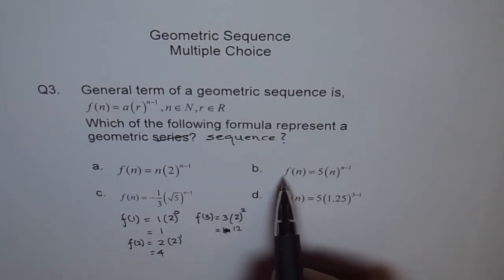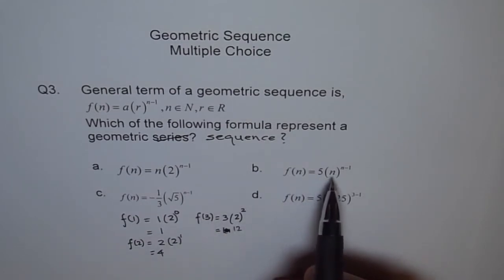Next term, f(n) equals 5·n to the power of (n minus 1). Here again, n should be a constant, not a variable. So this also does not represent a geometric sequence.